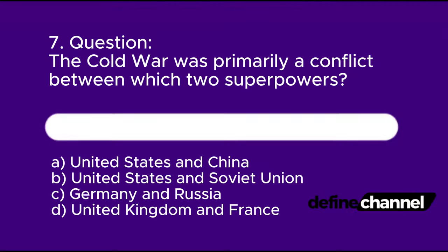Question 7: The Cold War was primarily a conflict between which two superpowers? A. United States and China, B. United States and Soviet Union, C. Germany and Russia, D. United Kingdom and France. Please determine which is the correct answer.